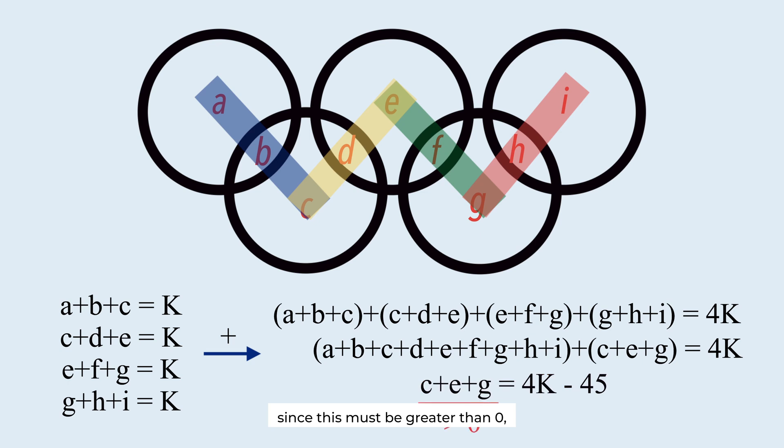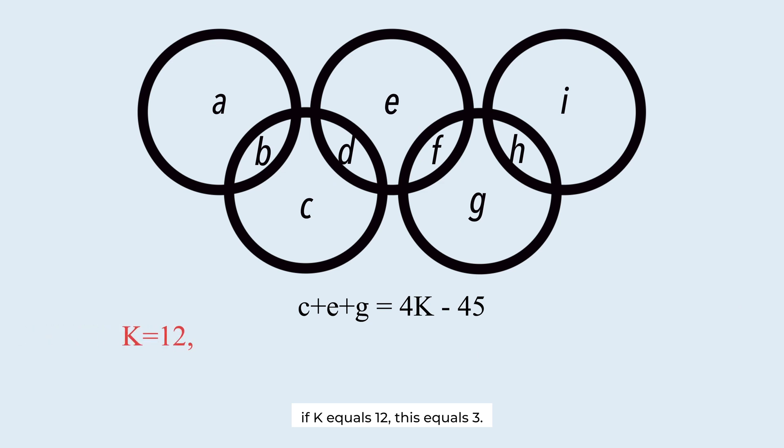Since this must be greater than 0, K must be greater than 11. If K equals 12, this equals 3. However, it is not possible because C, E, and G are natural numbers. The minimum of C plus E plus G is 6.